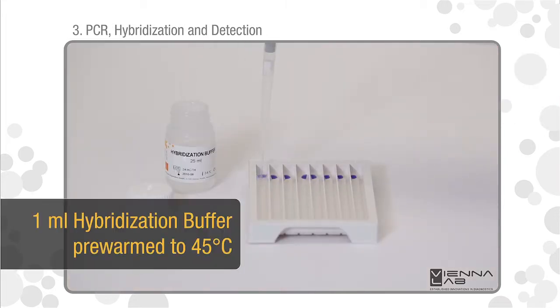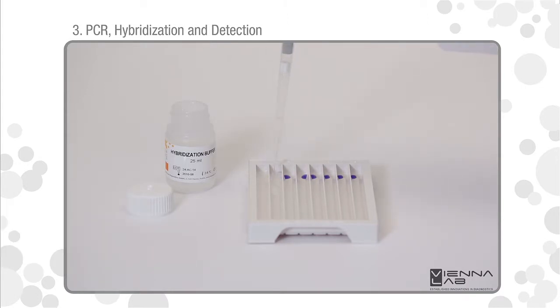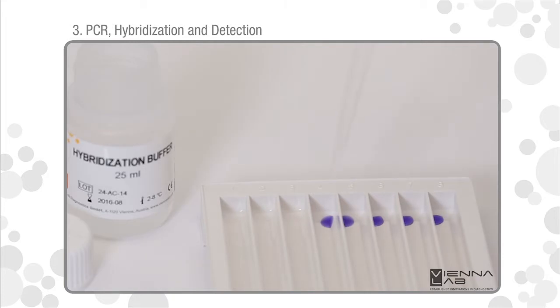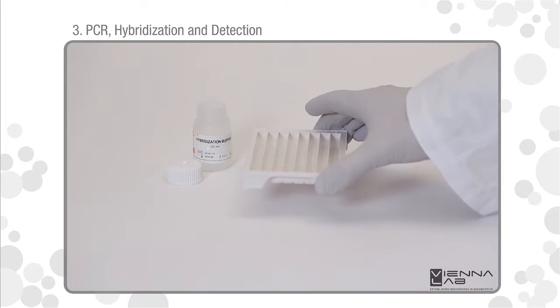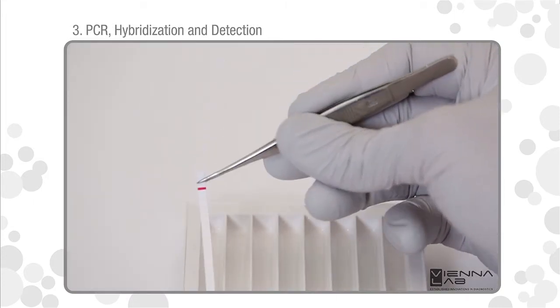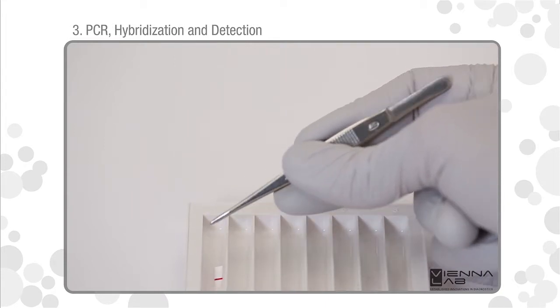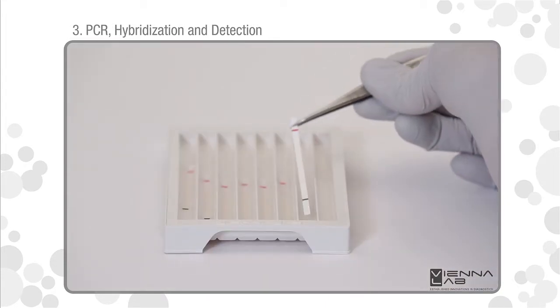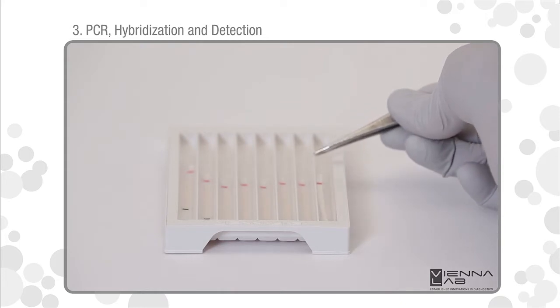Add one milliliter hybridization buffer into each lane. The blue color will disappear. Gently agitate tray. Insert test strips with marked side up into the respective lanes. Submerge test strips completely. In order to avoid cross-contamination, do not dip tweezers into solution.